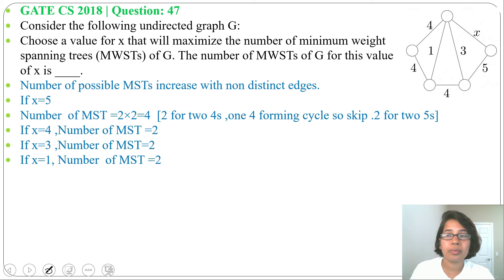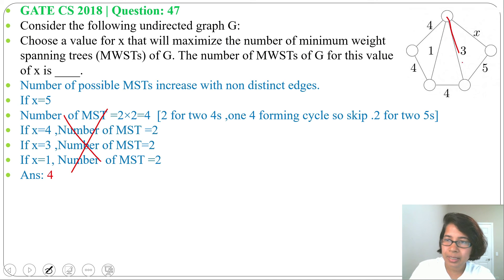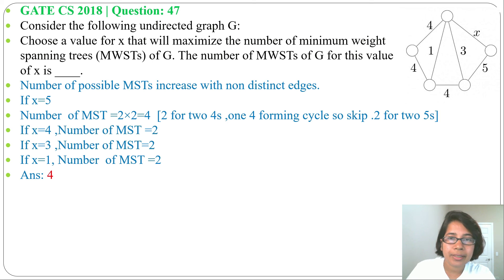We got the maximum number of minimum spanning trees when x equals 5 — that gives 4 minimum spanning trees. So the answer is 4. You don't need to check all cases; just look at this cycle where weights 3 and 5 appear. If x equals 5, there are two possibilities: you can choose either this 5 or that 5.